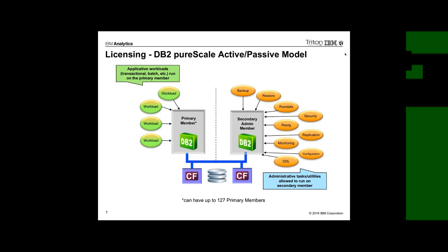The two-node PureScale option is a fantastic deal because you can do all your utilities, backups, and admin work on one node while the primary concentrates purely on production workload. The secondary node doing admin work is also ready for failover. If anything fails on the primary, all workloads instantly move to the secondary, and recovery is extremely quick because the locking managers have all the information about which pages and locks are in place.